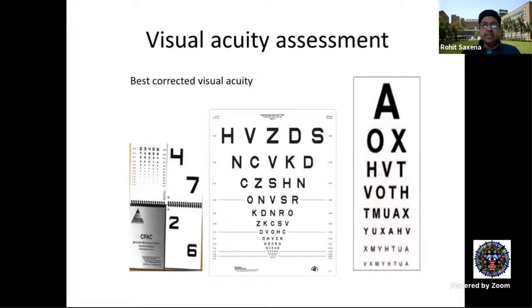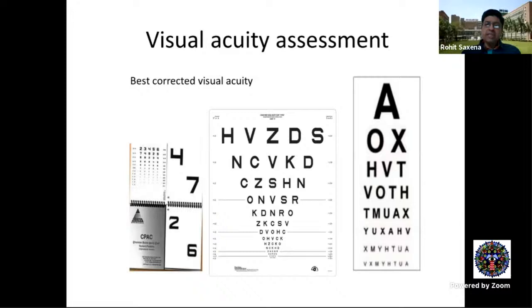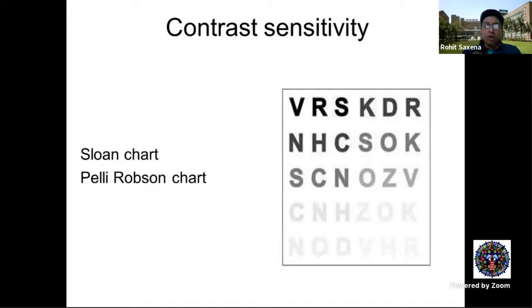Always assess best corrected visual acuity — uncorrected or presenting visual acuity is never enough. If the refractive error is unknown, use a pinhole at minimum. Best corrected vision is the most sensitive indicator for early visual dysfunction, and vision consists of visual acuity, color, contrast, fields, and stereopsis. Contrast can be assessed with the Pelli-Robson chart; even early contrast reduction is an important sign of optic nerve dysfunction.